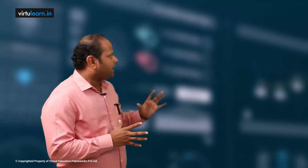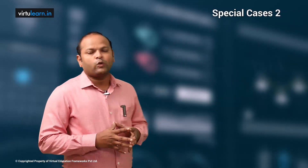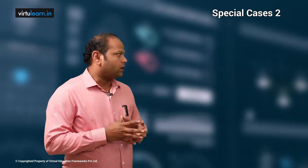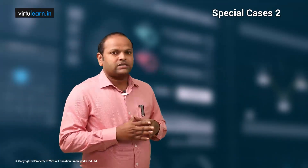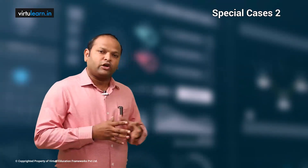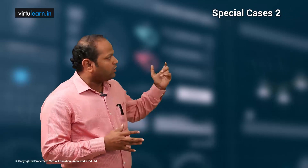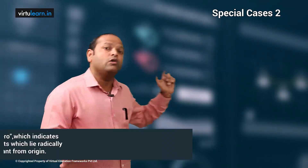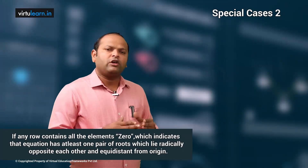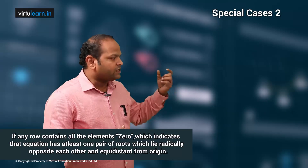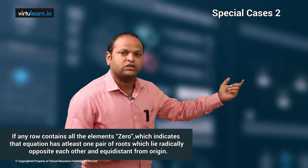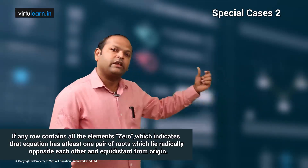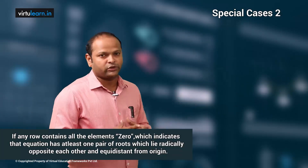Let us look at Special Case 2 in the Routh-Hurwitz Stability Criterion. In Special Case 1, if the first element is zero but all other elements are non-zero, you can replace that zero with epsilon and proceed. In Special Case 2, if you have one entire row with all zero elements, we need a different approach.